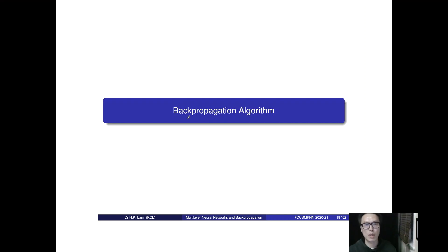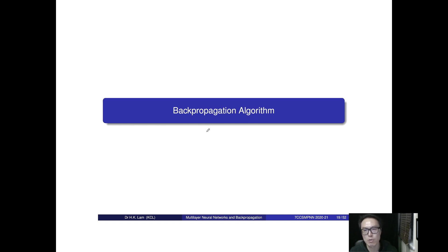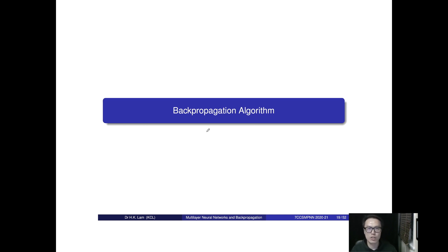This section is about the backpropagation algorithm. The main objective is to have an algorithm to adjust W, the connection weights WJI and WKJ, so that we are able to achieve some training objective. I'm going to show you how we can do that using the backpropagation algorithm.